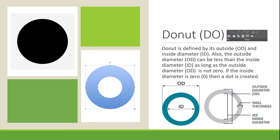For the donut command, there are specific rules. You have an outside diameter (OD) and an inside diameter (ID), and that's how you define a donut. It works a little funny — sometimes your outside diameter can actually be smaller than your inside diameter and AutoCAD will accept it. But if you set your outside diameter to zero, it won't take that. Follow the rules provided and you should have no problems creating donuts.